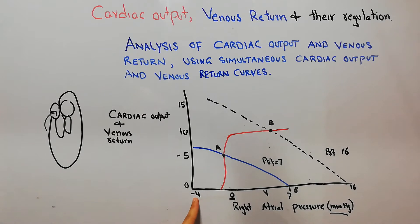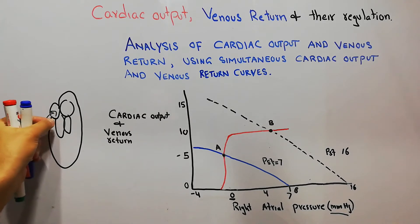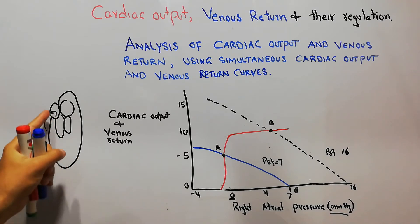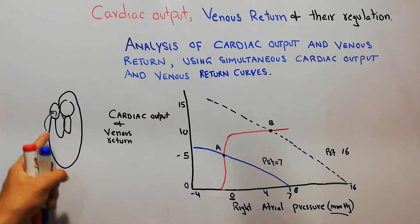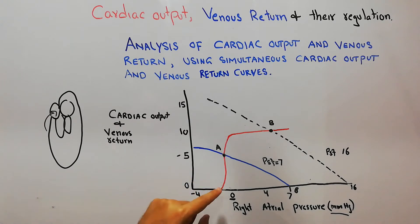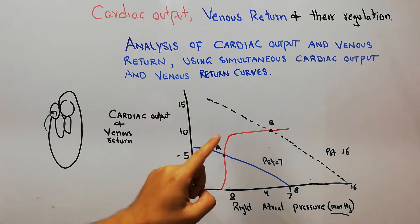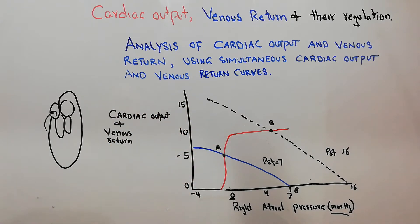Initially when right atrial pressure is negative, there is no cardiac output because blood cannot return — negative pressure causes vessel collapse. As pressure starts increasing, blood starts coming to the heart and the heart starts pumping, so cardiac output starts increasing. The point at which cardiac output equals venous return has been labeled as point A, known as the equilibrium point.